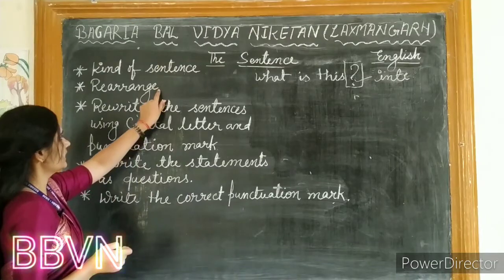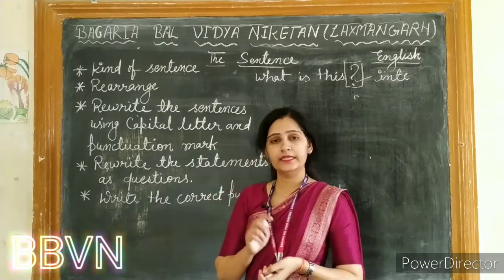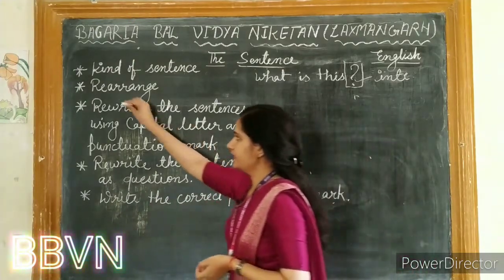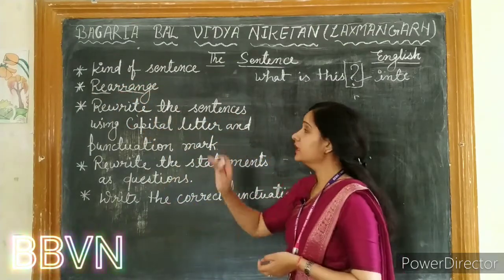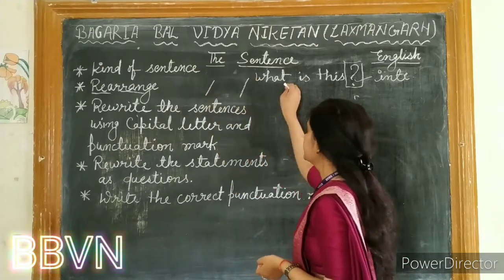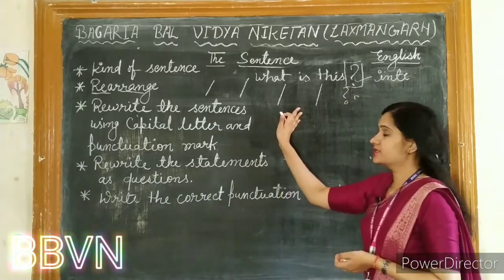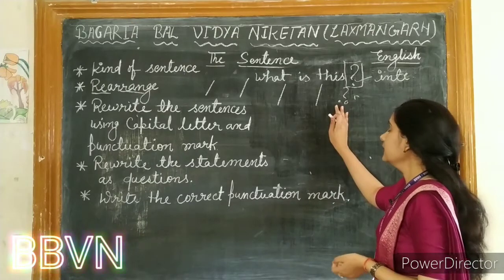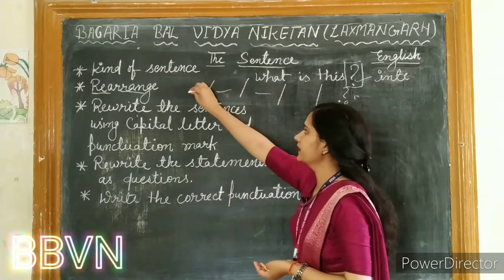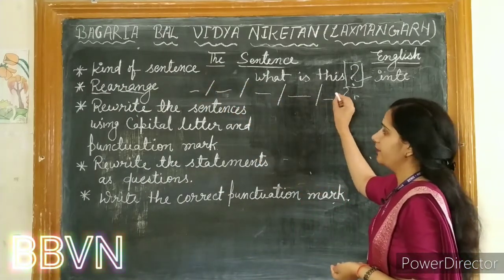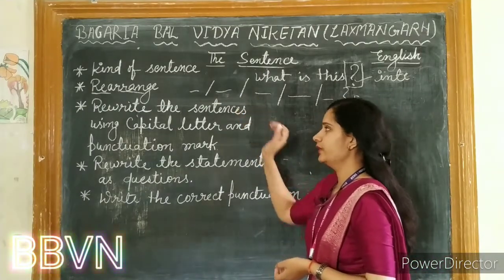Second, we will talk about rearranging. The word 'rearrange' is made of two parts: re plus arrange. 'Re' means again and 'arrange' means to synchronize or put in order. Jumbled words are written in a mixed-up way and you have to assemble them into a meaningful sentence. If there is a question mark, it forms an interrogative sentence; a full stop means you form an assertive sentence.